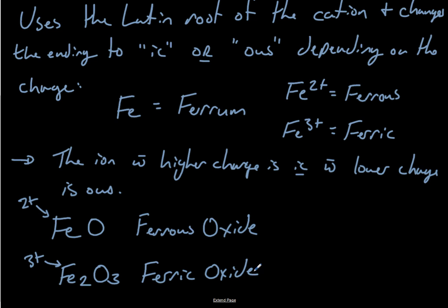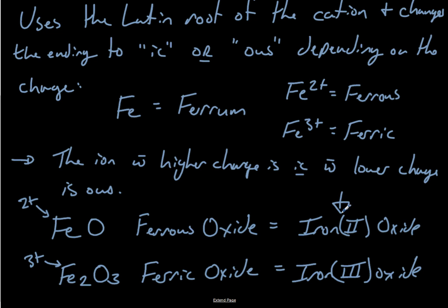Okay? So that's how that works. That's the classical system. This is the exact same thing as iron two oxide that we learned about before. And that's another name for it. And this is iron three oxide. Generally, chemistry is moving towards using this system only. It's a better system. Right? It tells you more about the iron.